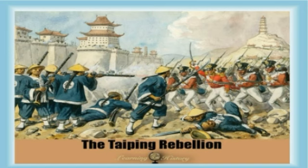The Taiping Rebellion was a major rebellion at a time when the government was becoming unpopular and weak. European pressure on China to open its doors to foreign trade was also increasing. The opening of China to Western imperialism led to economic exploitation and the impoverishment of the Chinese people.